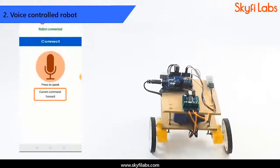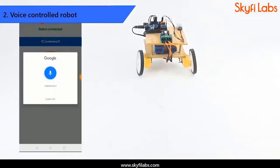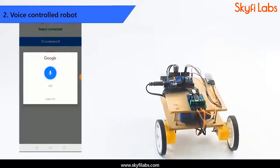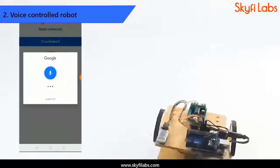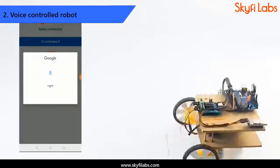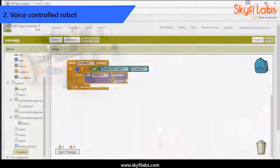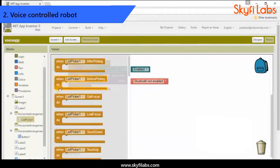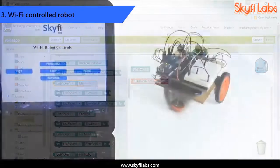Then, you will build a voice-controlled robot that uses Bluetooth communication technology to receive instructions from a user's voice commands and moves accordingly. You will also learn to develop an Android app using MIT App Inventor as part of this project.